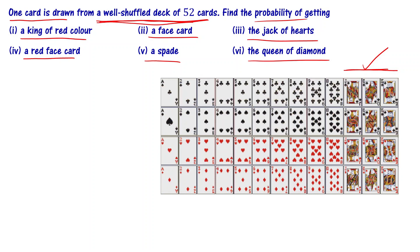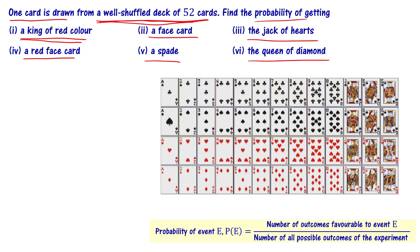Now, you have to find what is the probability of getting a king of red color. The probability of an event E is: P(E) equals the number of outcomes favorable to event E divided by the number of all possible outcomes of the experiment. Here, the experiment is drawing one card from a well-shuffled deck of 52 cards.